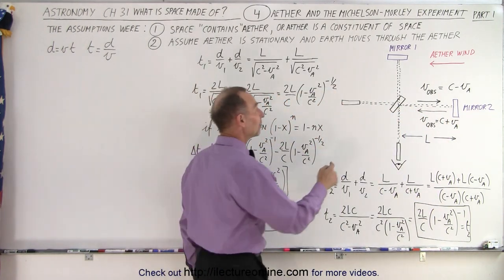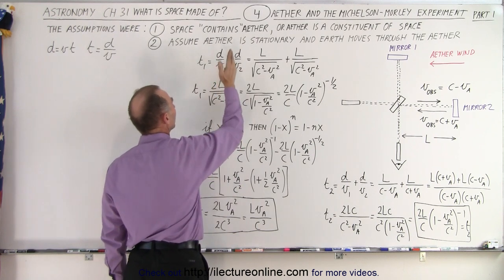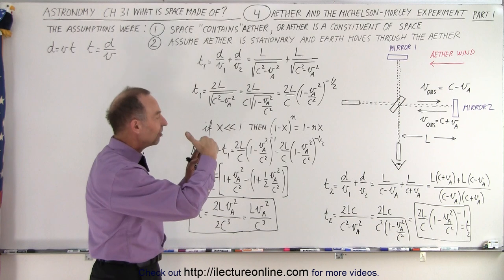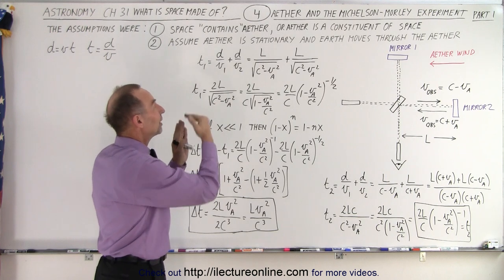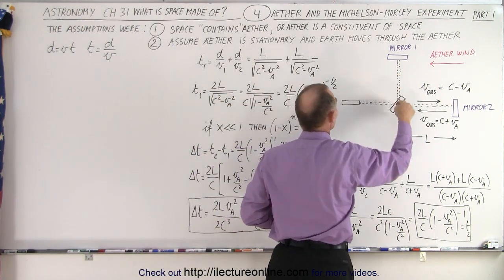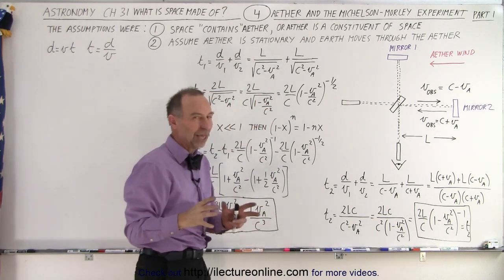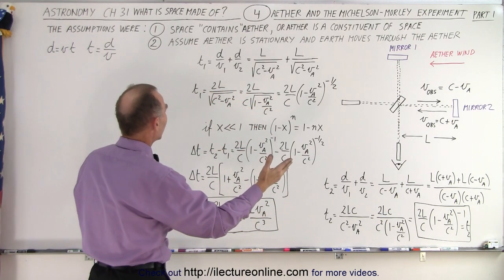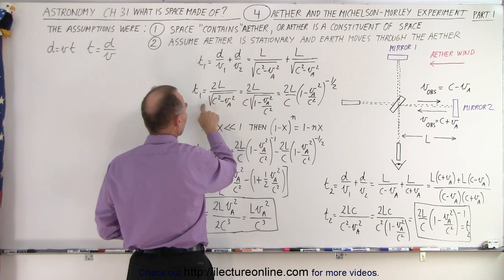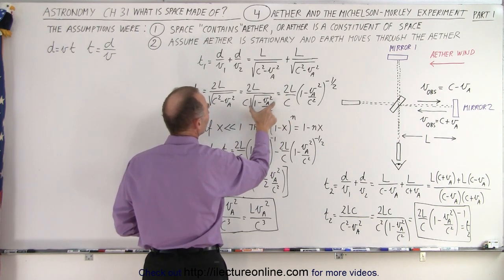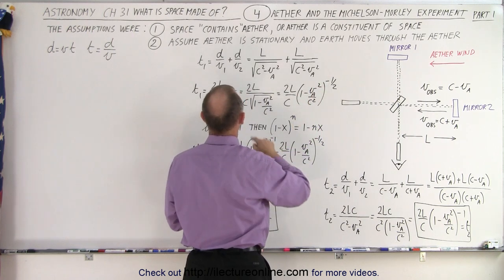Now we calculate T1, the time for light to go from here to mirror one and back. It will be the distance divided by the velocity in one direction, plus the distance divided by the velocity in the opposite direction. Since the speed of light is in the vertical direction and the speed of the ether is perpendicular, the relative losses are the same in both directions. The distance is the same, so it's L divided by the square root of C squared minus V_A squared — that's the Pythagorean theorem rule. Algebraically combining those, factoring out C squared and taking it out of the radical, we end up with two L over C times one minus V_A squared over C squared, to the negative one-half power. Notice the comparison: this is T2 and this is T1.